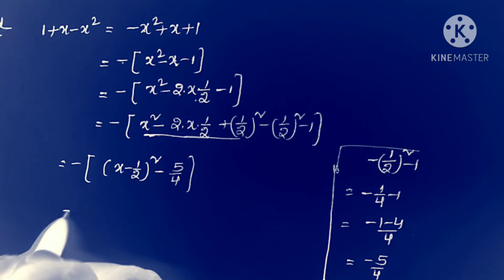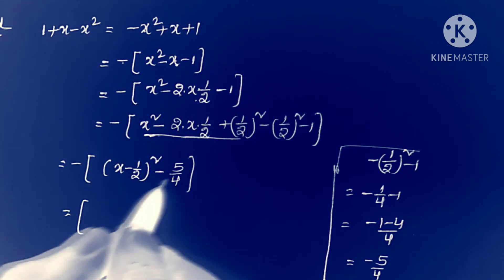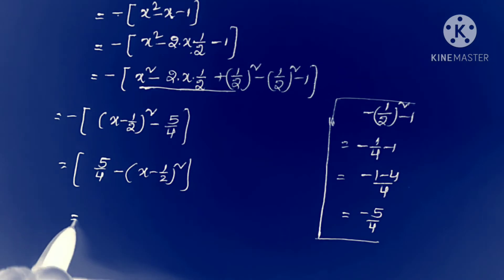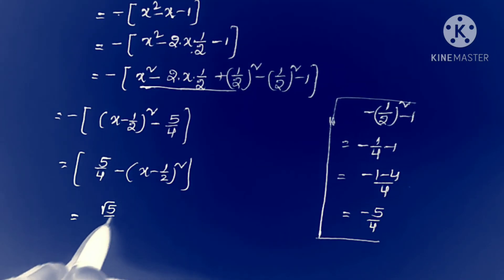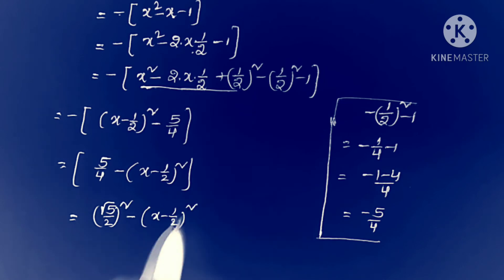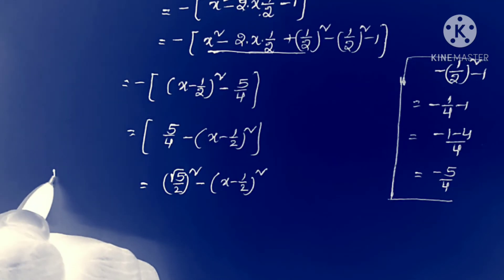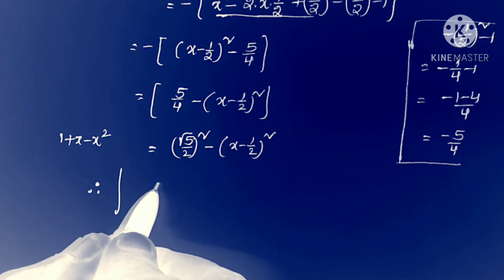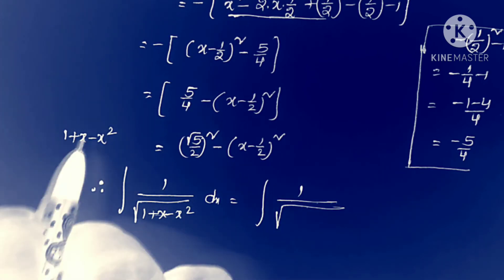Substituting this value, and multiplying by minus, the expression 1 plus x minus x squared becomes (root 5 by 2) whole squared minus (x minus 1 by 2) whole squared, since 5 by 4 equals (root 5 by 2) whole squared. Now substituting into the given integral: integral 1 by square root of (root 5 by 2) whole squared minus (x minus 1 by 2) whole squared, times dx.